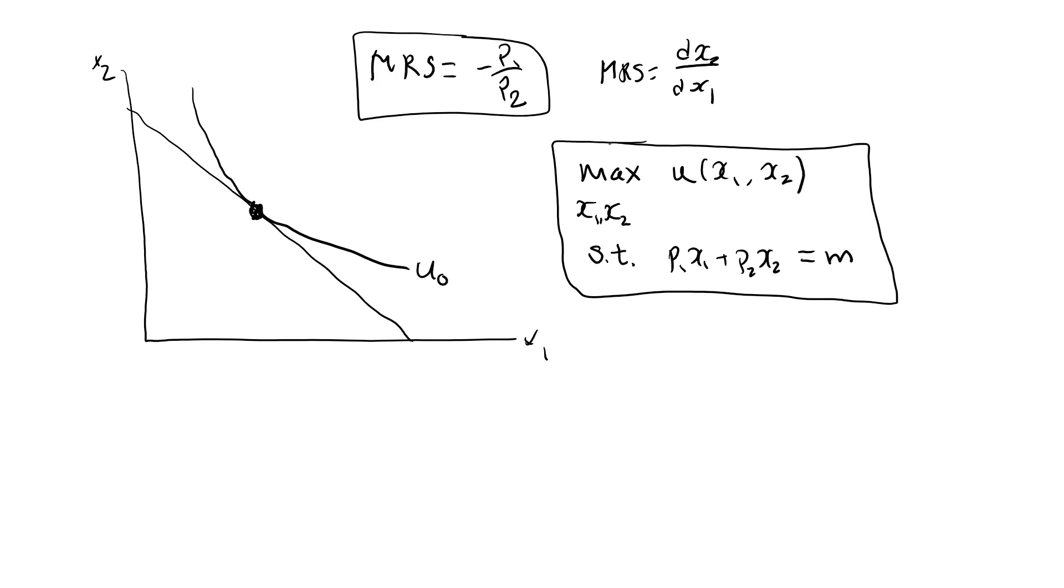There are actually two hidden constraints here, since both x1 and x2 need to be greater than or equal to zero. We know that this problem will have a unique solution, either an interior solution or a boundary solution.